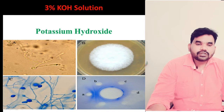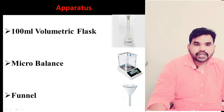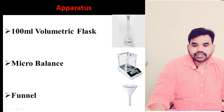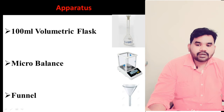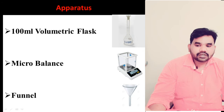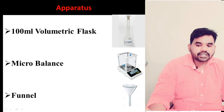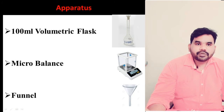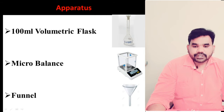KOH is also known as potassium hydroxide. To prepare this 3% KOH solution, we need some apparatus. The first one is a 100 ml volumetric flask — here is the image, you can see the 100 ml volumetric flask. Another apparatus we need is a micro balance, and another one is a funnel. These are the three important apparatus we need to prepare the 3% KOH solution.